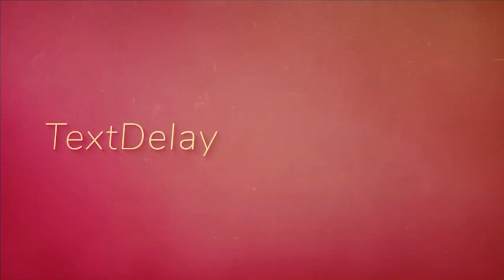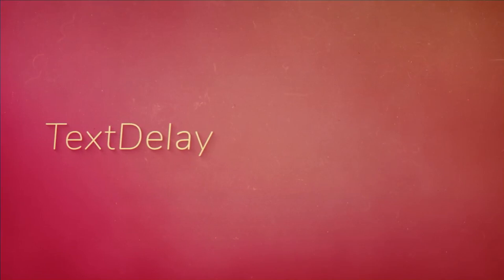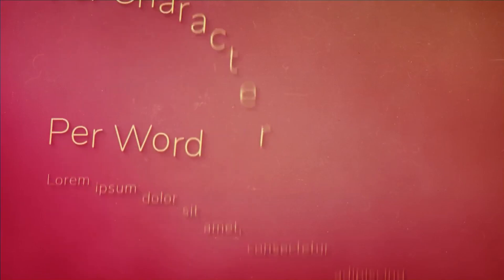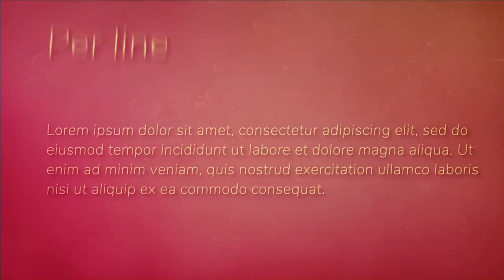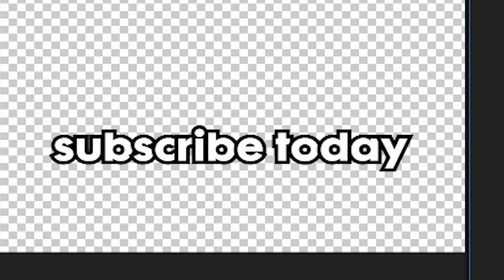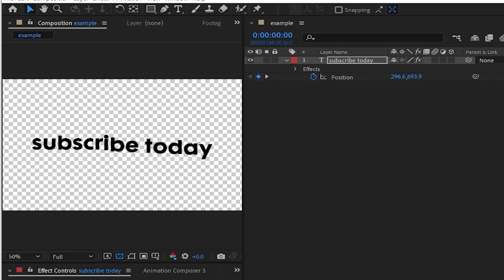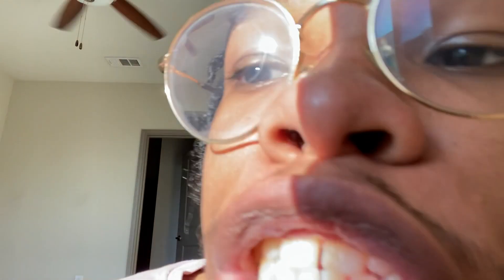Number four, Text Delay. Text Delay takes each character of your word and then applies whatever motion effects you add onto the text, onto each individual word, line, or character. You make text go up, rest of the text follow on delay. Must be magic.